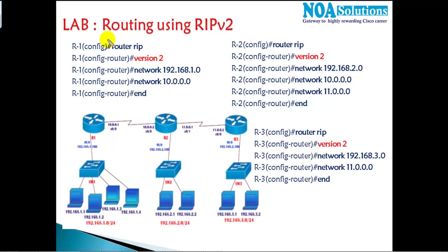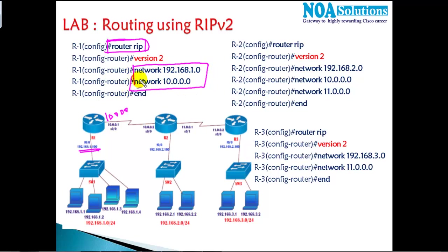In the first line we tell which protocol we want to use. On Router 1 I have two networks: 10.network and 192.168.1.network — I just need to advertise those two networks. There's no need to worry about the next hop or destination. If I don't know other networks, I can still learn about them through RIP advertisements. You only need to advertise your own interfaces.